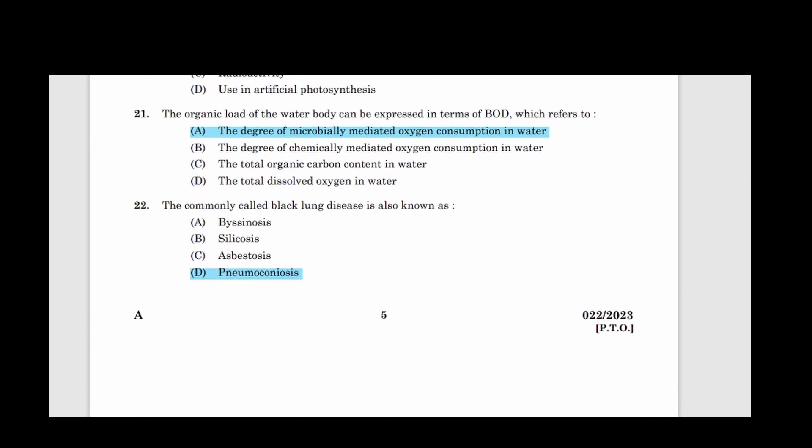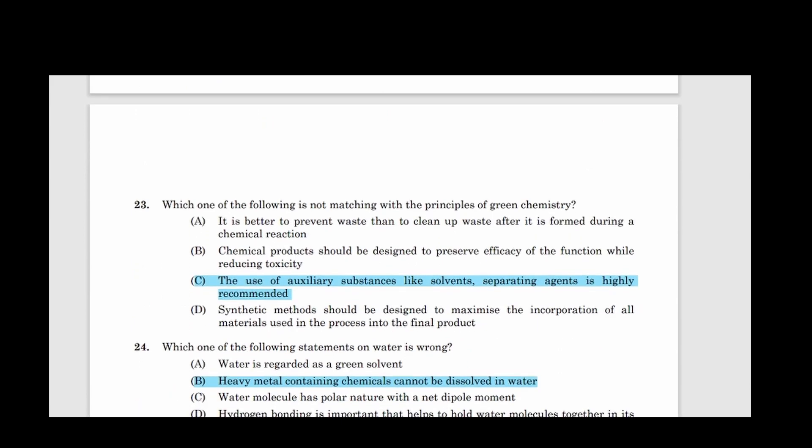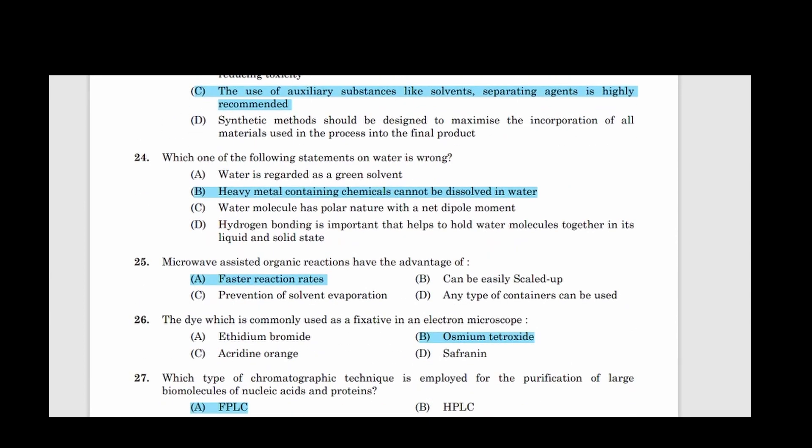Twenty-second question: The commonly called black lung disease is also known as. Option D, Pneumoconiosis. Question twenty-three: Which one of the following is not matching with the principles of green chemistry? Answer option C, The use of auxiliary substances like solvents separating agents is highly recommended. Twenty-four: Which one of the following statements on water is wrong? Answer option B, Heavy metal containing chemicals cannot be dissolved in water. Twenty-five: Microwave assisted organic reactions have the advantage of. Answer option A, Faster reaction rates.